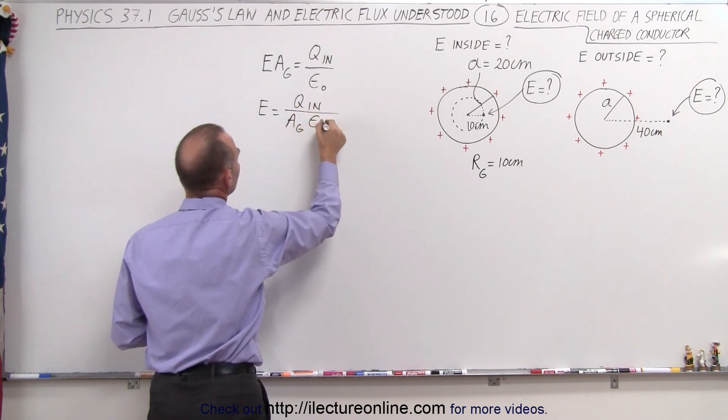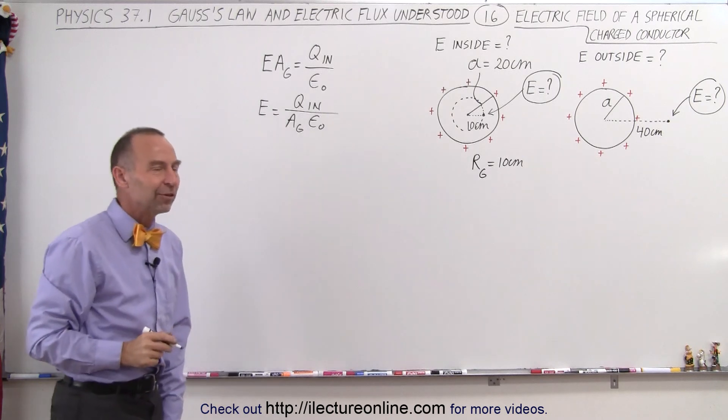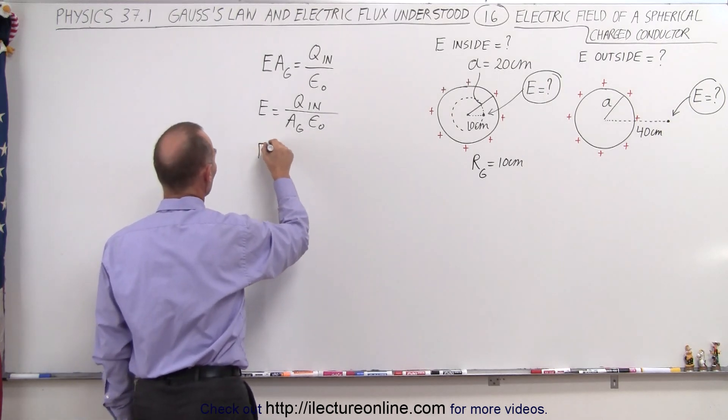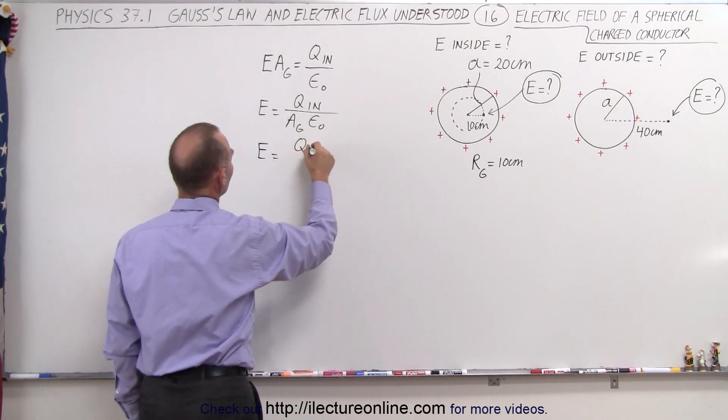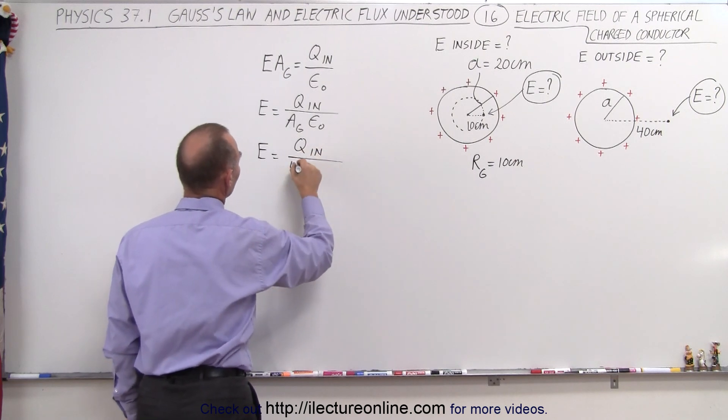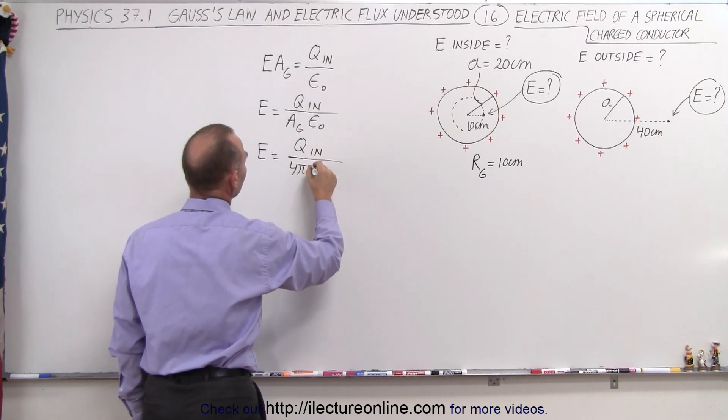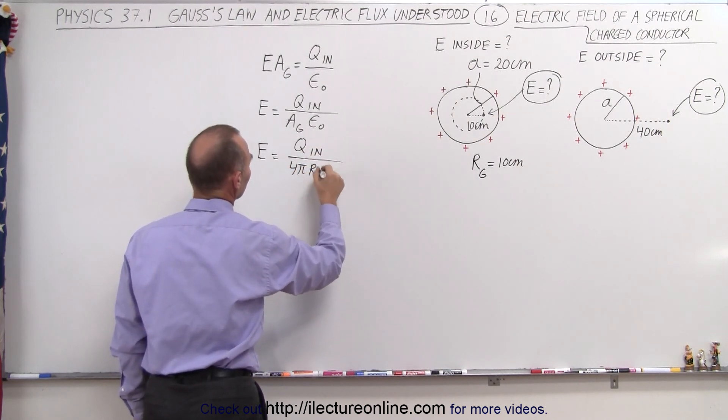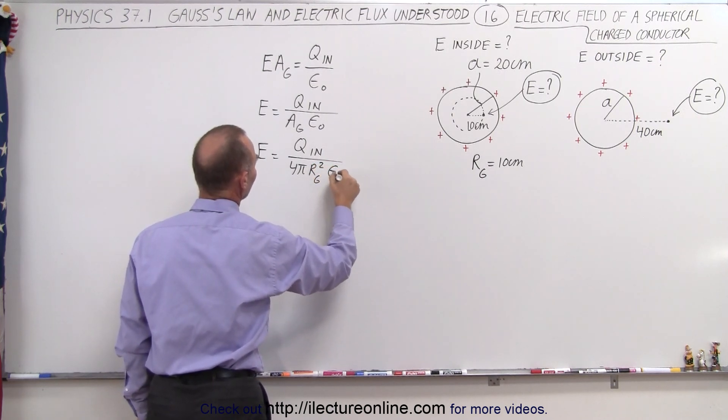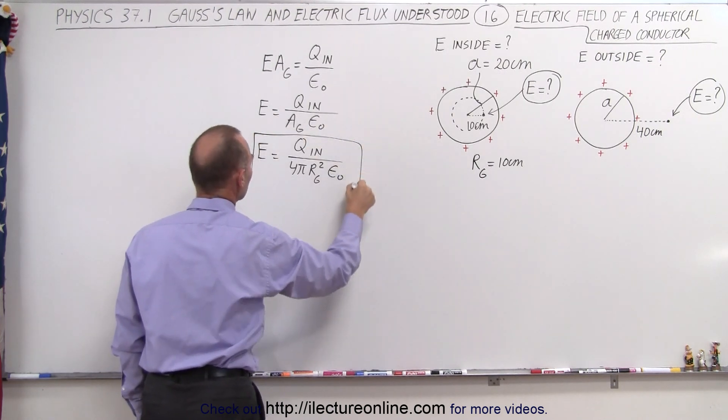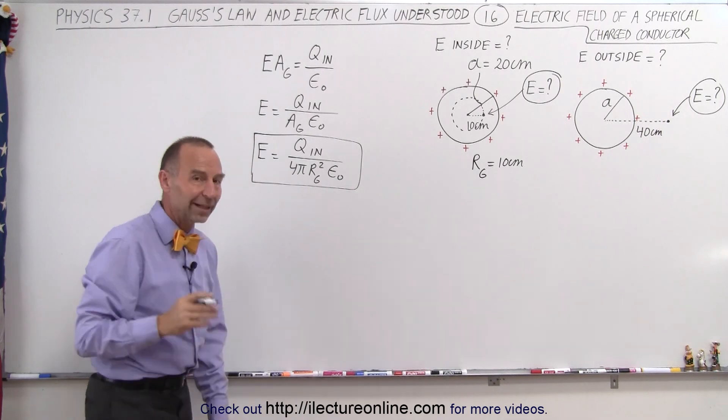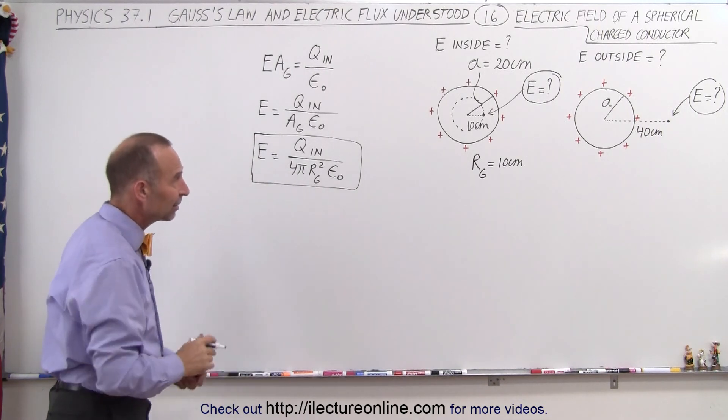Or the electric field is equal to the charge inside the Gaussian surface divided by the area of the Gaussian surface times the permittivity of free space. And we can then write the equation as Q inside divided by 4 pi, the Gaussian surface, R sub-g squared times epsilon sub-naught. So this is the equation we can use to calculate the electric field in this kind of geometry.